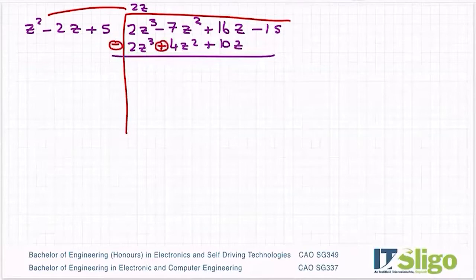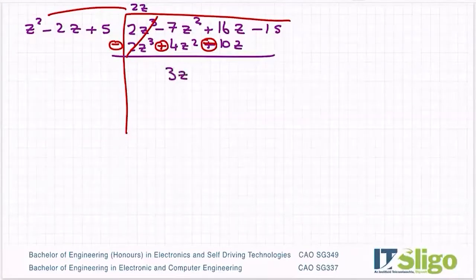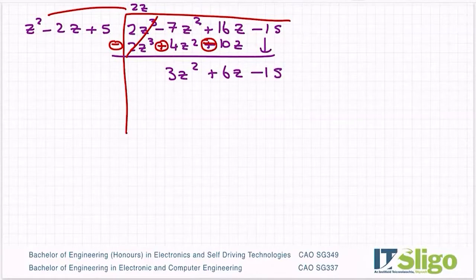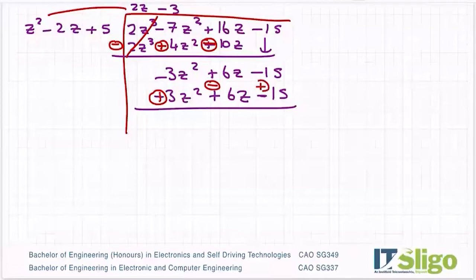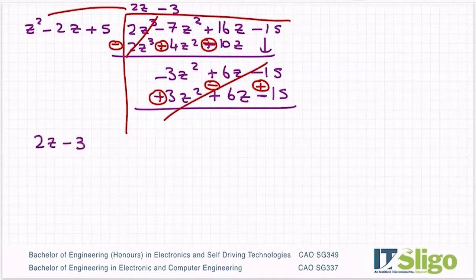Change the signs and cancel. Minus 7 plus 4 gives minus 3z squared; then bringing down gives minus 3z squared plus 6z minus 15. Now multiply z squared minus 2z plus 5 by minus 3: that gives minus 3z squared plus 6z minus 15. Change the signs — everything cancels. So the quotient is 2z minus 3.